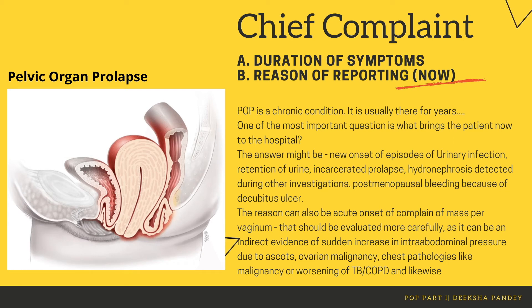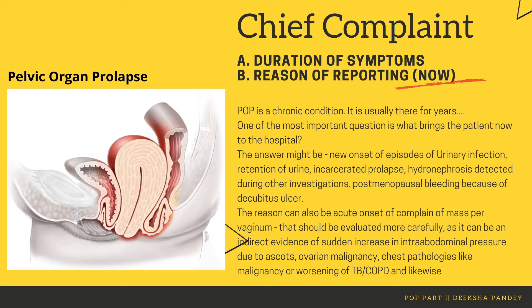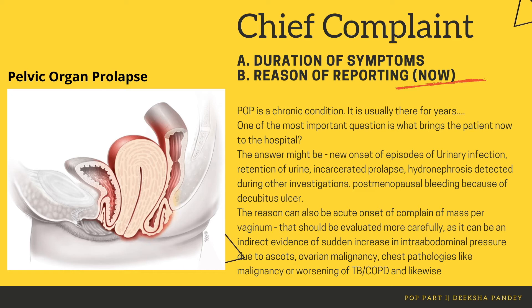There are two things important to ask in chief complaints. One is, as always, the duration of symptoms — but perhaps more important is the reason why the patient has reported now. POP is a chronic condition, usually present for years, and one of the most important questions to ask is what brings the patient to the hospital today. Her answer might be a new episode of urinary infection, retention of urine, incarcerated prolapse, hydronephrosis detected during other investigations, or postmenopausal bleeding because of a decubitus ulcer.